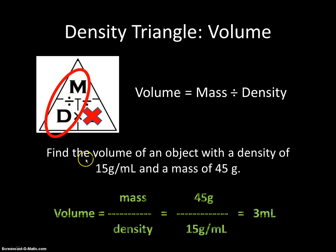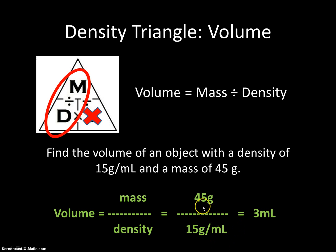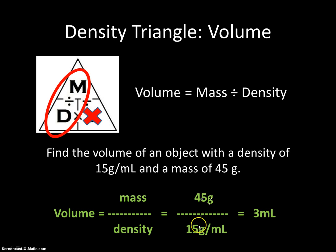Volume equals mass divided by density, which equals 45 grams divided by 15 grams per milliliter. Because we have matching units, the grams cancel out and we're left with milliliters. 45 divided by 15 is 3, so our answer is 3 milliliters. We double-check: 45 divided by 15 is 3, our answer is in milliliters, and milliliters is a unit of volume — so we've checked our work and know this is a correct answer.